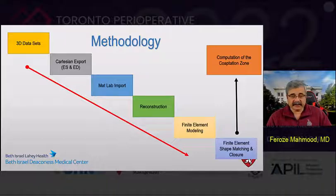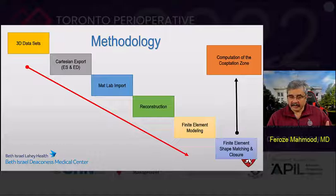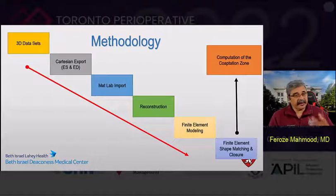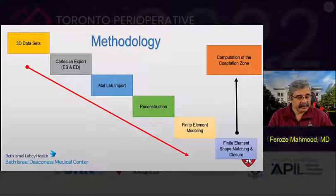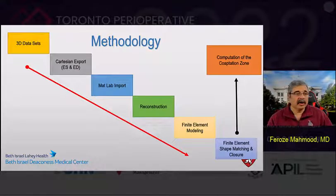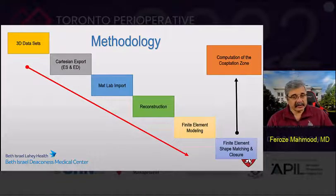To summarize the simplified methodology: they had 3D datasets, Cartesian exports, went to MATLAB, then reconstructed the valve, applied finite element modeling to simulate pressure on the valve from end-diastole to end-systole, then shape-matched with the mitral valve against the digital reconstruction of those ovine models created as a reference. After that, the zone of coaptation was created and the area was calculated.